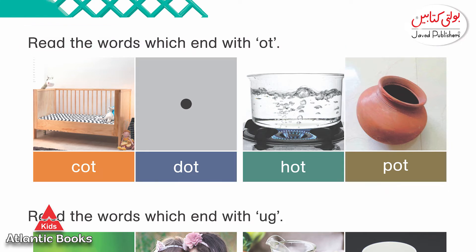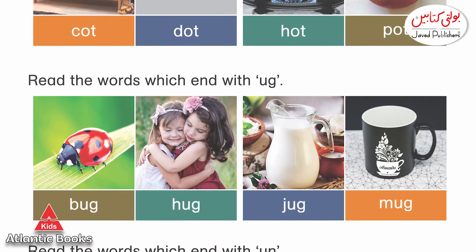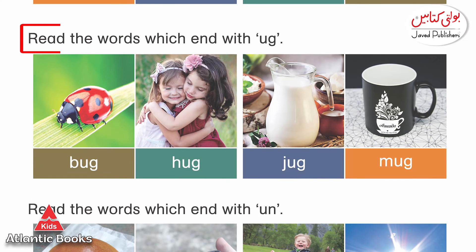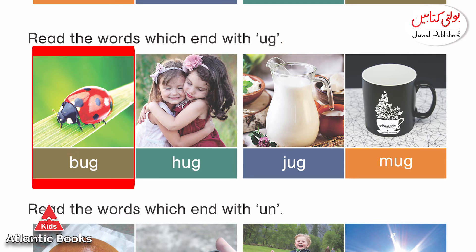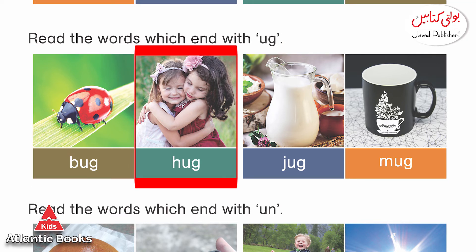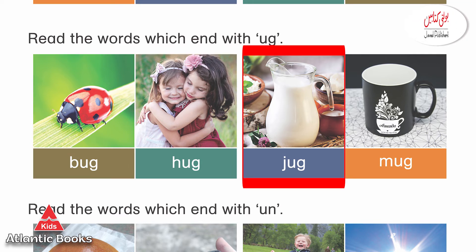The next combination is U and G, which makes the sound 'ug'. The words are: bug, hug, jug, mug.